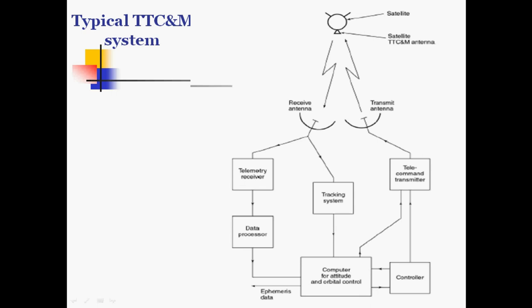The data received from the telemetry receiver is processed by the data processor and the tracking system, and given to the computer at the earth station for attitude and orbital controls. This computer at the earth station sends controls to the controller and the telecommand transmitter. The controller sends commands to the transmitter antenna, which transmits control commands to the satellite, and in this way we can control the operation at the satellite.